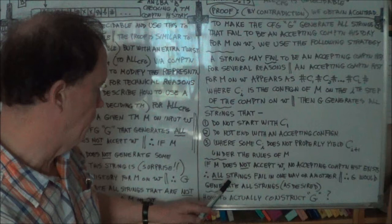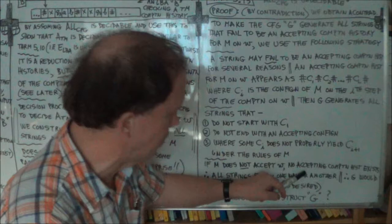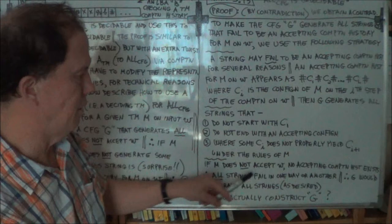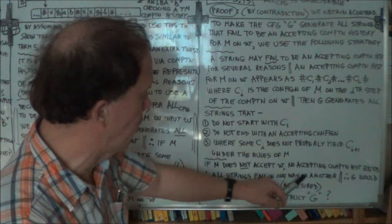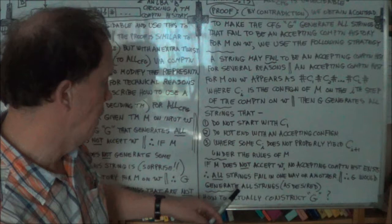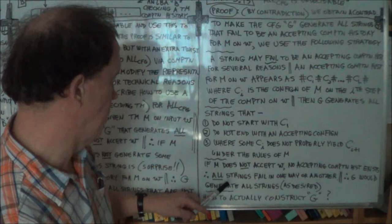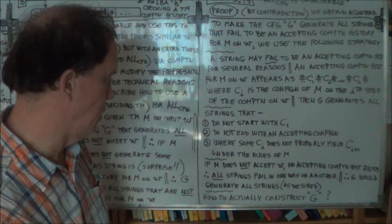Therefore all strings fail one way or another. If M does not accept W, the accepting computation history string does not exist, and all the others G generates. Either it fails because M did not accept W, or it fails because G generates all the non-accepting ones — either way, you've got all strings failing. And that gives you information — that allows S to make a decision.